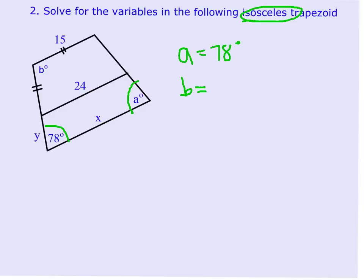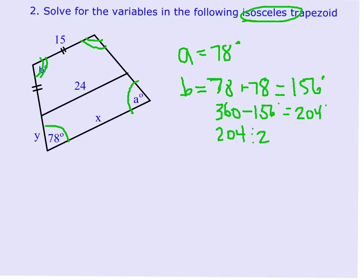To find angle B, we did a problem similar to this in one of the other videos. And what we're going to do is know that the trapezoid angles have to add up to 360 degrees, because it's a quadrilateral. So I'm going to add 78 plus 78, and that's going to give us 156 degrees. And then I'm going to subtract that from 360, so 360 minus 156, and that's 204 degrees. And because I know that these two angles are congruent, I'm going to take 204 and divide it by 2, and that gives me 102 degrees. So B is 102 degrees.